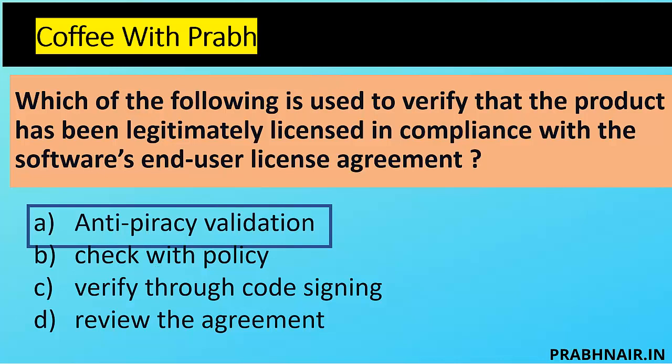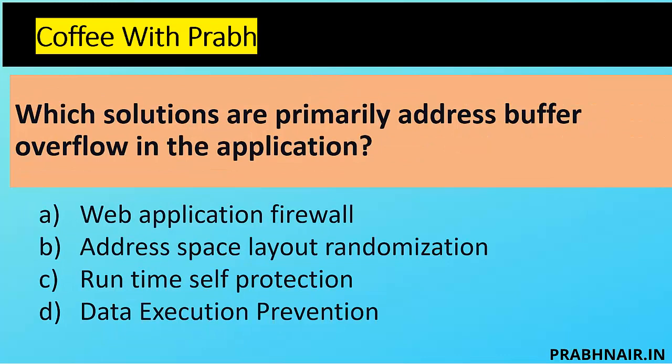Let's move to the next coffee shot. Which solution primarily addresses buffer overflow in an application? Buffer overflow is a kind of attack where we overflow the memory — that's why we use memory protection to prevent it. Buffer overflow is about overflowing the buffer and gaining access to a system for further access.